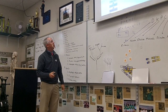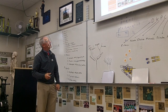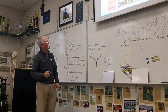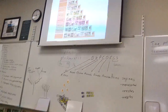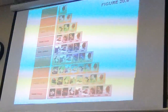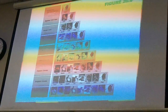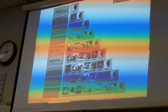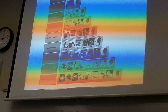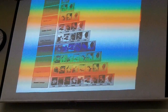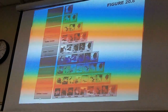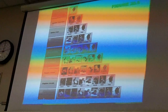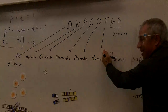Linnaeus invented this whole classification system — it's a great system. As you go backwards from species toward domain, more and more organisms fit into each category. As you go forward toward species, there are fewer and fewer organisms in each category until you reach just one organism at the end.